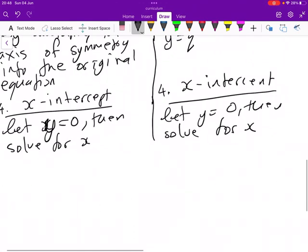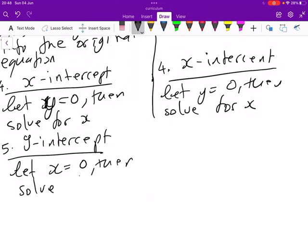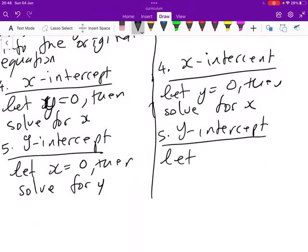And lastly, we want to find the y-intercept. The y-intercept, we are going to let x be 0, then solve for y. And in this case here, the same thing we are going to do. We are going to let x be 0, then solve for y.